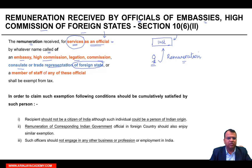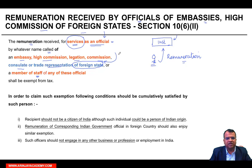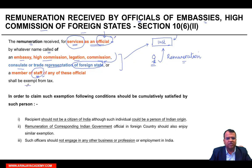अब trade representation इंडिया में भी बहुत सारी होती है. लेकिन हम जिस embassy या high commission की बात कर रहे हैं, वो है of a foreign state. और a member of staff of any of these officials — या तो आप staff member हैं इन में से किसी भी official के. अगर आपको remuneration मिल रहा है because you are an official or a member of staff of any of these institutes, then it shall be exempt.